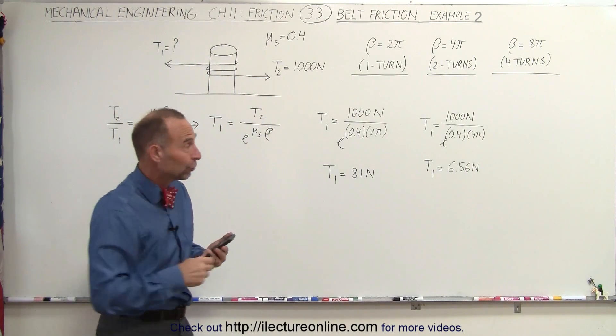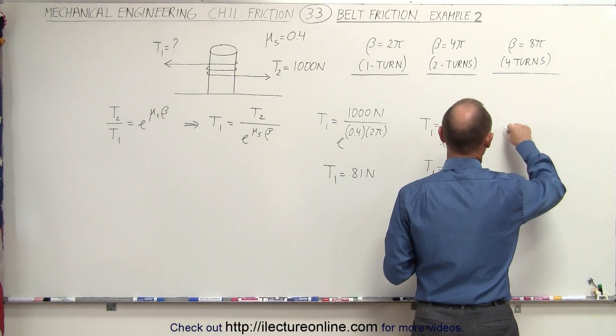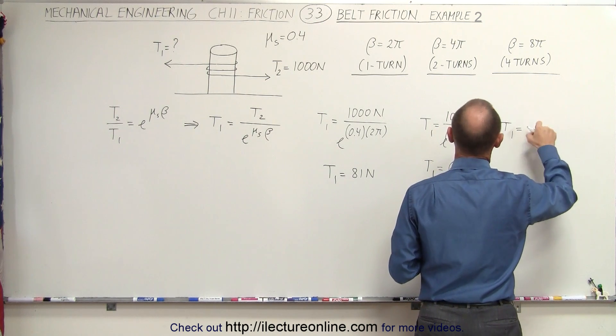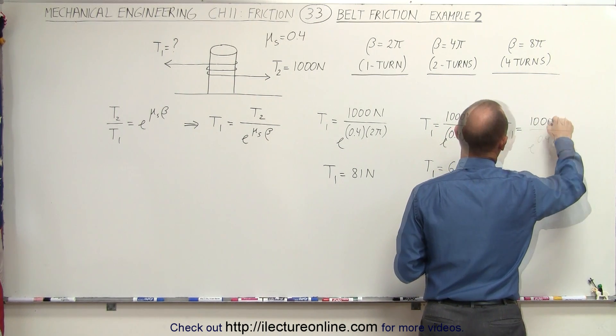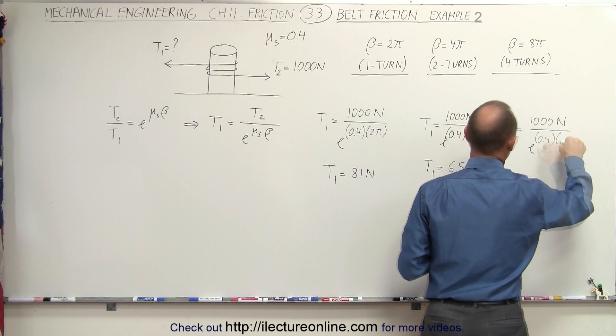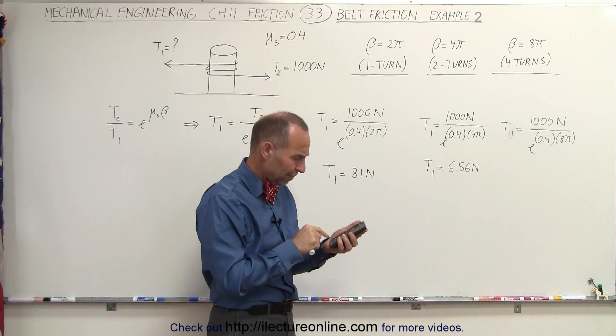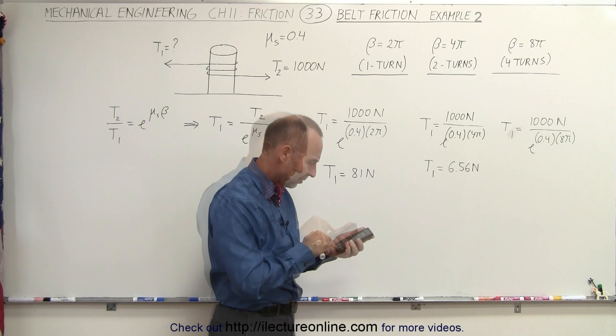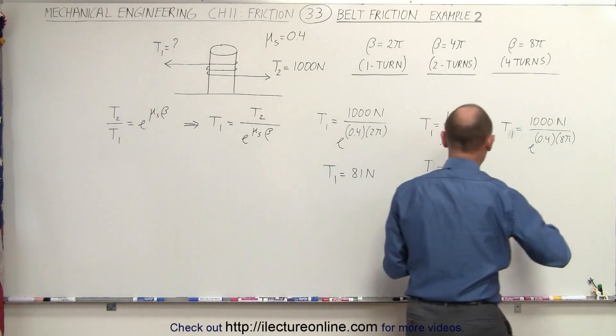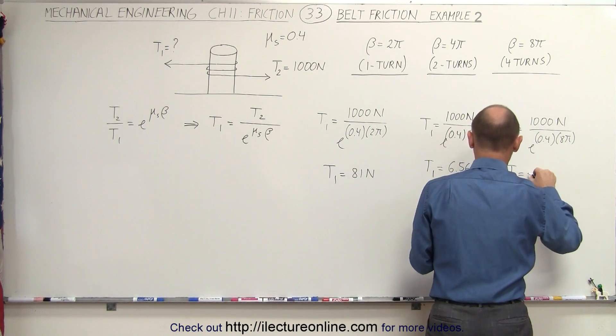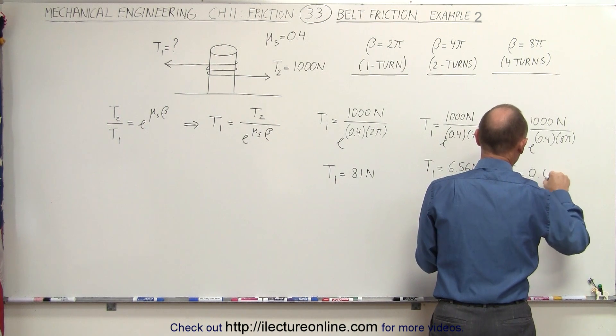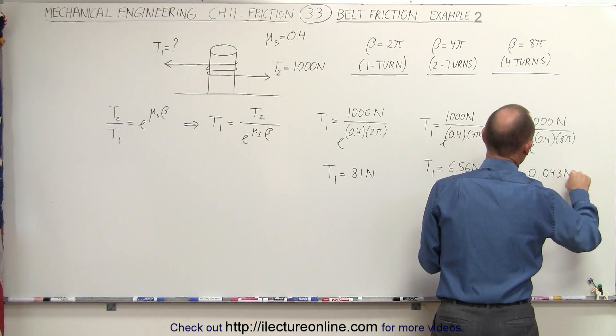Now let's do it four turns and see what happens. We get T1 is equal to 1,000 newtons, times 8 pi, which is four times around. 0.4 times 8 equals, and now T1 is just a very tiny 0.043 newtons.